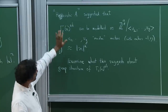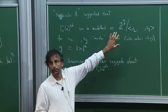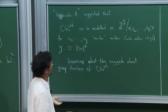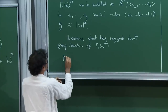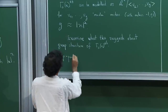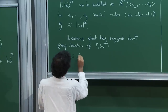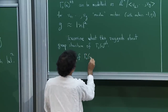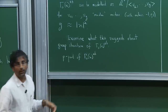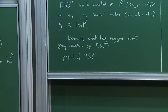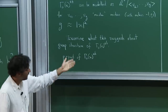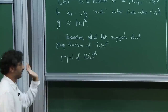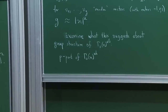If we're going to talk about the group structure, we might as well look at it prime by prime. If you believe this heuristic, let's look at a single prime p and the p-part — throw away all the torsion that's prime to p, and just keep whatever factors of Z mod p, Z mod p-squared and so on.